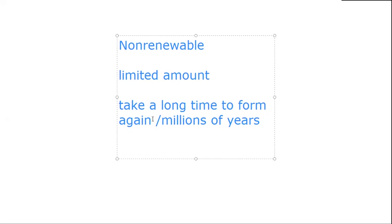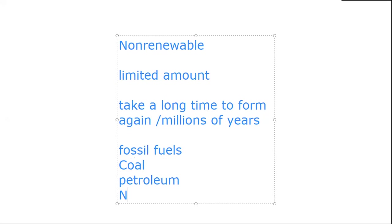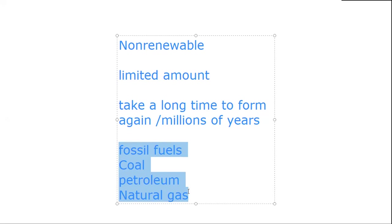Examples of non-renewable energy resources: the fossil fuels. Do you know the types of fossil fuels? There are three: coal, petroleum, and natural gas. Fossil fuels are the most important energy resources on Earth. They are expensive, they are limited, not found in all countries, and once these resources are used up, they will take a long time to form again. For these reasons they are non-renewable.